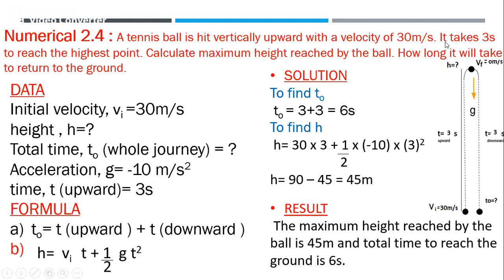Numerical 2.4: A tennis ball is hit vertically upward — since it was hit with a velocity, the initial velocity is not zero. When the observer started observing, the ball was moving at 30 m/s upward. That's the initial velocity. Drawing a diagram is preferable as it makes data extraction and calculations much easier to visualize.